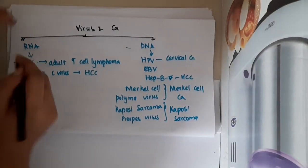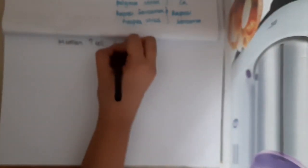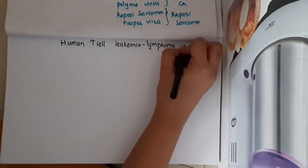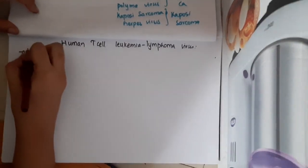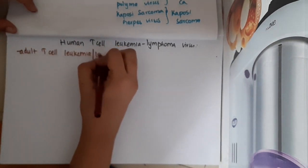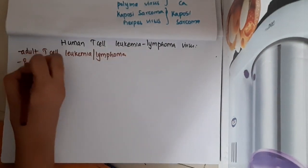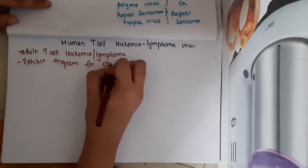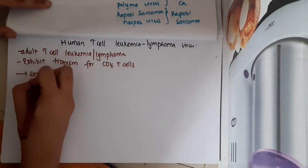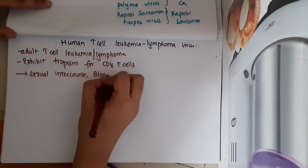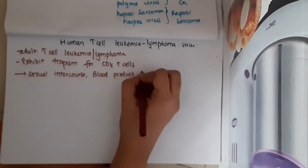Let us learn some important points about human T-cell leukemia or lymphoma virus. This virus causes adult T-cell leukemia or lymphoma and exhibits tropism for CD4 cells. It is transmitted via sexual intercourse, blood products, and breastfeeding.